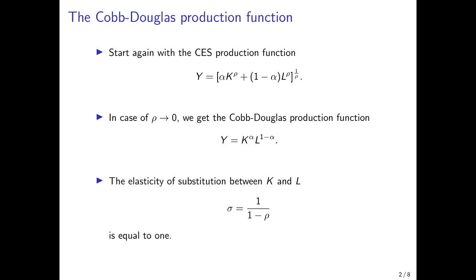So the Cobb-Douglas case is the case that separates the two, in which capital and labor can be substituted to a certain extent, but they are neither gross substitutes nor gross complements.